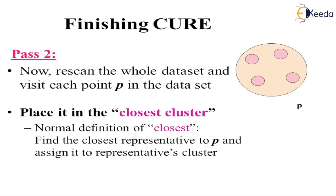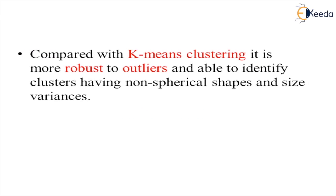We find the closest representative point to P and assign it to the representative cluster. Compared to K-means clustering, QR is more robust to outliers and able to identify clusters having non-spherical shapes and sizes, as well as varying variances.